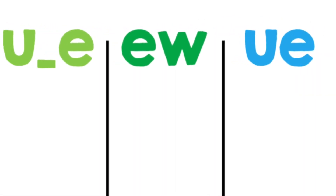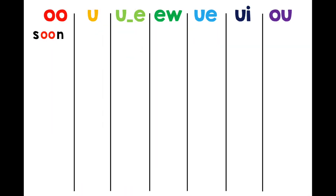There are several ways that we make the OO sound. Let's start with OO. We spell soon S-O-O-N, loop L-O-O-P, and food F-O-O-D.